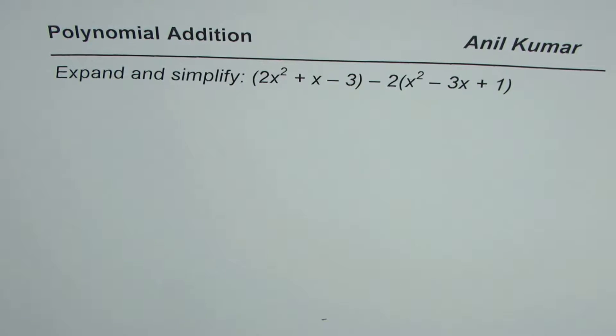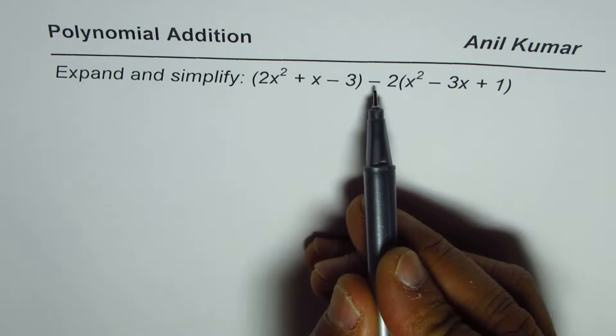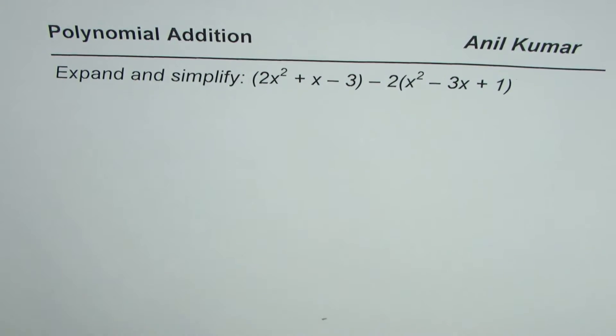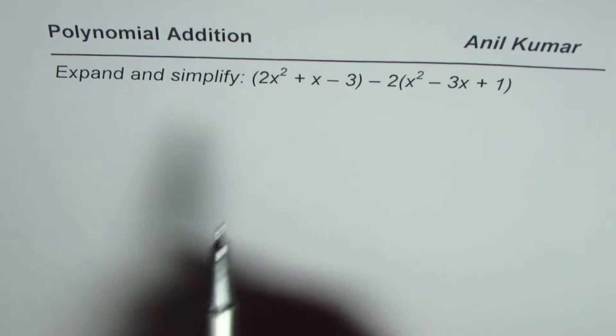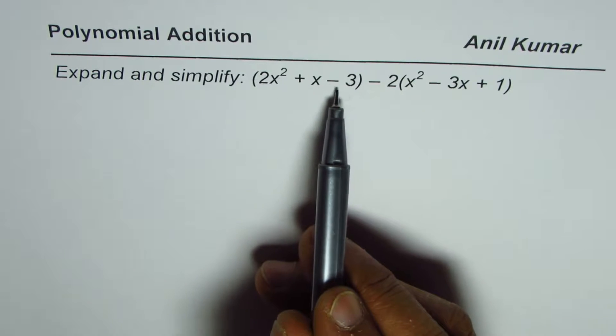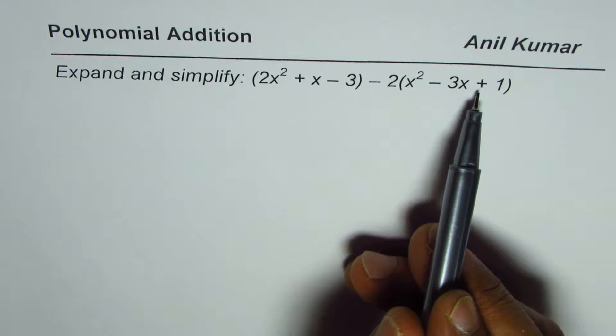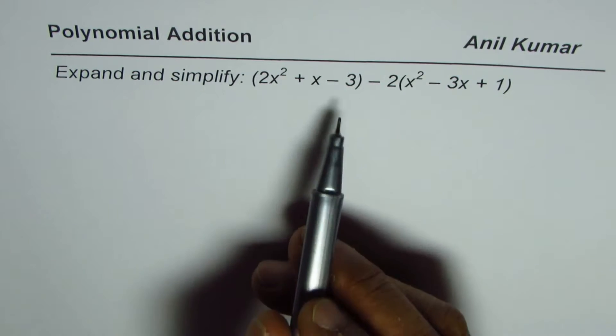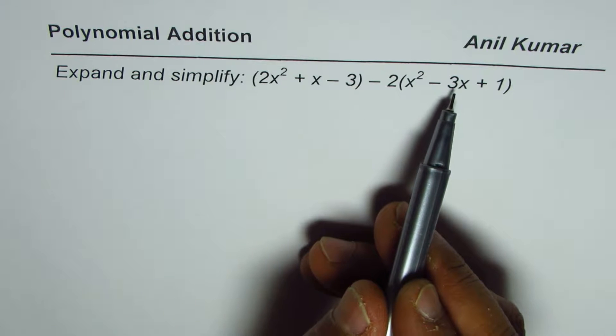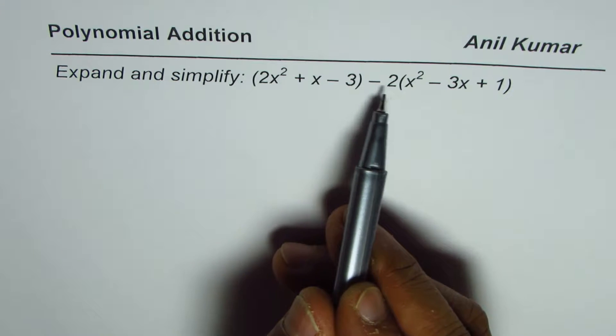I'm Anil Kumar. Let us understand how to add polynomials in this particular video. Adding and subtracting is kind of the same operation. We do have minus here, but we'll call it addition. Expand and simplify: 2x² + x - 3 minus 2 times (x² - 3x + 1). Now since the other polynomial is multiplied by -2, we'll first expand using distributive property and then combine the like terms.